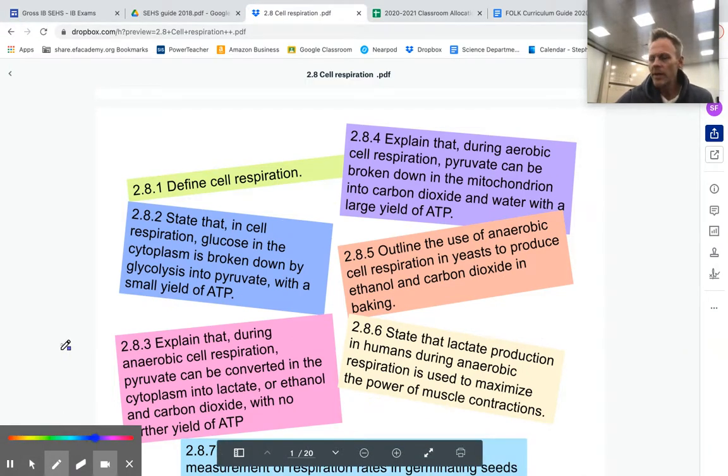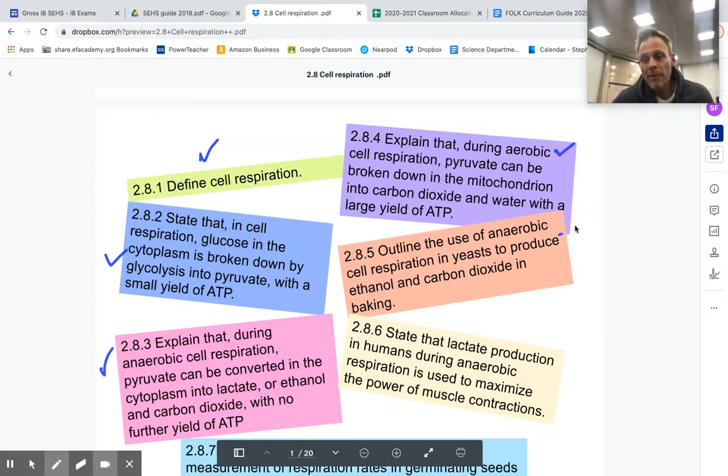In 2.8, we're going to need a definition for cell respiration. We're going to talk about this process called glycolysis. We're going to talk about two types of cell respiration: anaerobic, which is without oxygen, and aerobic, which is with. We're going to talk about how we can use anaerobic respiration in yeast to make bread and also make some alcohol and drinks that have alcohol in it.